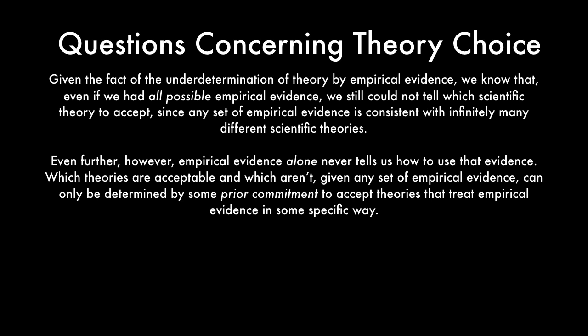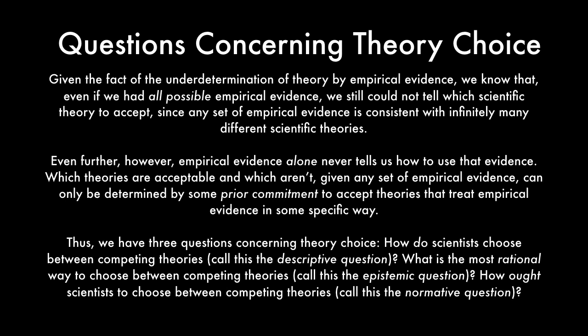Which theories are acceptable and which aren't, given any set of empirical evidence, can only be determined by some prior commitment to accept theories that treat empirical evidence in some specific way. These prior commitments don't come from the evidence itself. Thus, we philosophers of science who are interested in how scientists in fact choose between competing theories have three questions that present themselves to us.